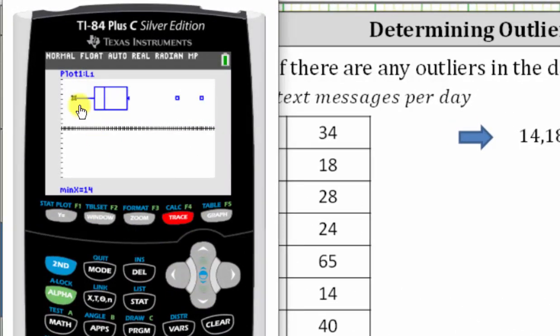The minimum is 14, quartile one is 24, the median is 29, quartile three is 40, the right tail ends at 41.